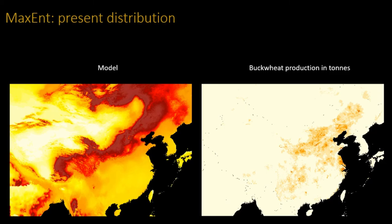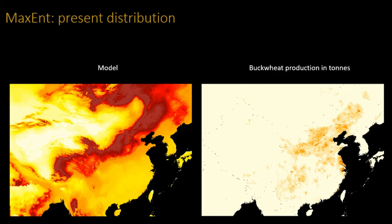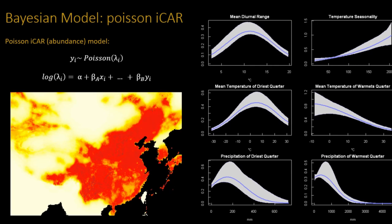This is the best we can do with Maxent and the Bayesian binomial model. There's one more approach I'm currently trying, which is to look at the current distribution of buckwheat — production data — to fit a Bayesian Poisson model. It looks slightly different from the binomial one: instead of estimating the likelihood of finding buckwheat as 0 or 1, it estimates the amount of buckwheat you would expect to get at a certain place. As you can see, this model looks much more reliable — these are the mean distribution and mean probability of distribution.